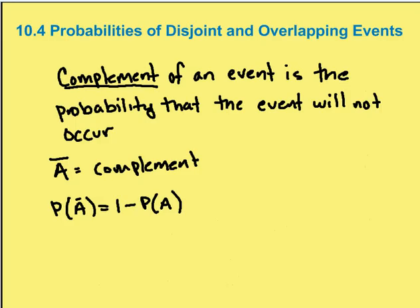The last term we need to learn about is what's called a complement. And the complement of an event is the probability that the event in question will not occur. And we say that the complement is identified by A with a little line on top, and we call that line bar. So we say A bar.